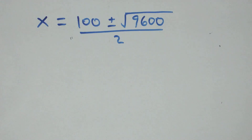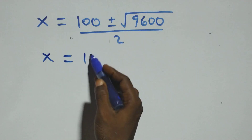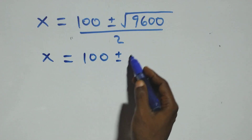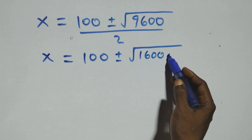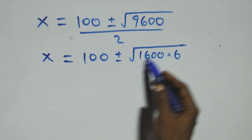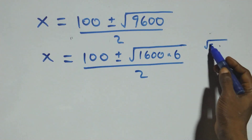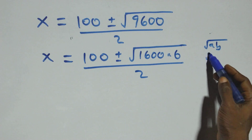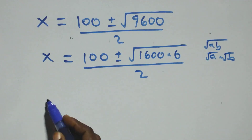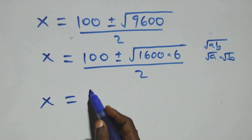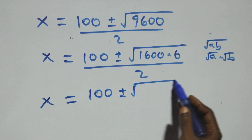We now simplify the square root of 9,600. Using the rule that root of a times b equals root a times root b, we separate this and write x equals to 100 plus or minus square root of 1,600 times 6, giving us root 1,600 times root 6.